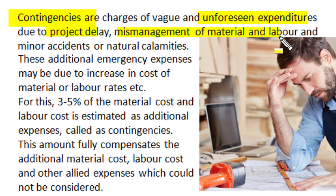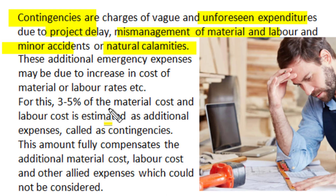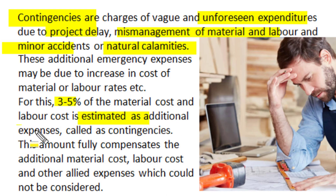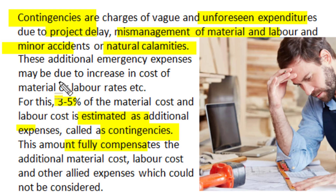Contingencies are charges of a vague nature arising from unfortunate or unexpected conditions — they are unforeseen expenditures which occur due to delay in project execution, mismanagement of material or labor, minor accidents, or natural calamities. These additional emergency expenses may be due to increases in cost of material or labor rates during execution of the electrical installation work. For all such unforeseen conditions, 3 to 5 percent of material and labor cost is estimated as contingencies.